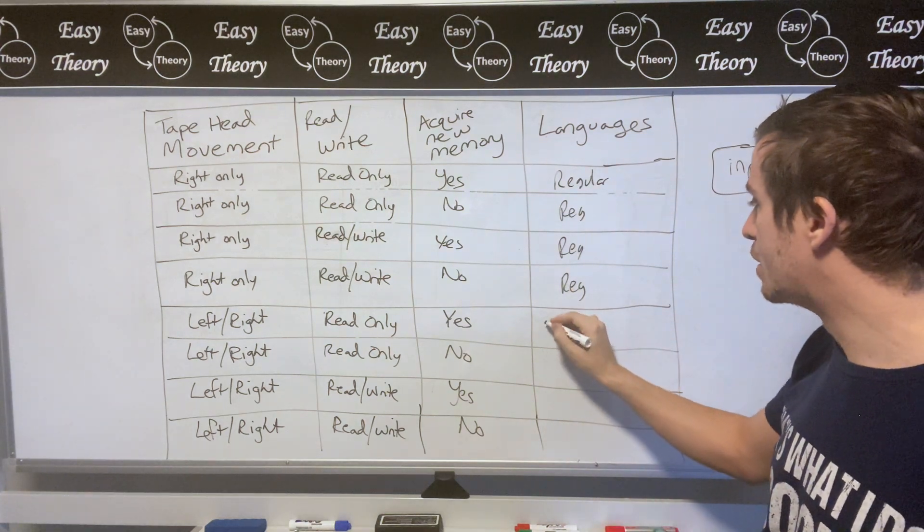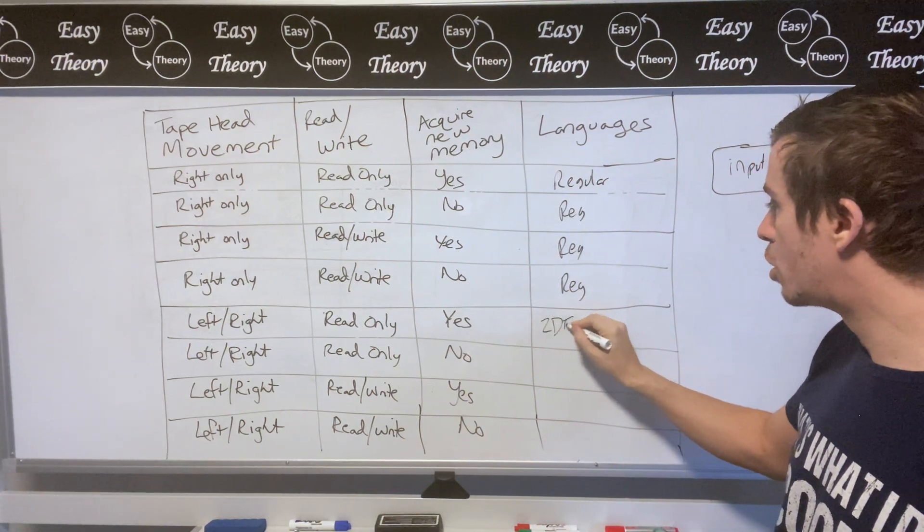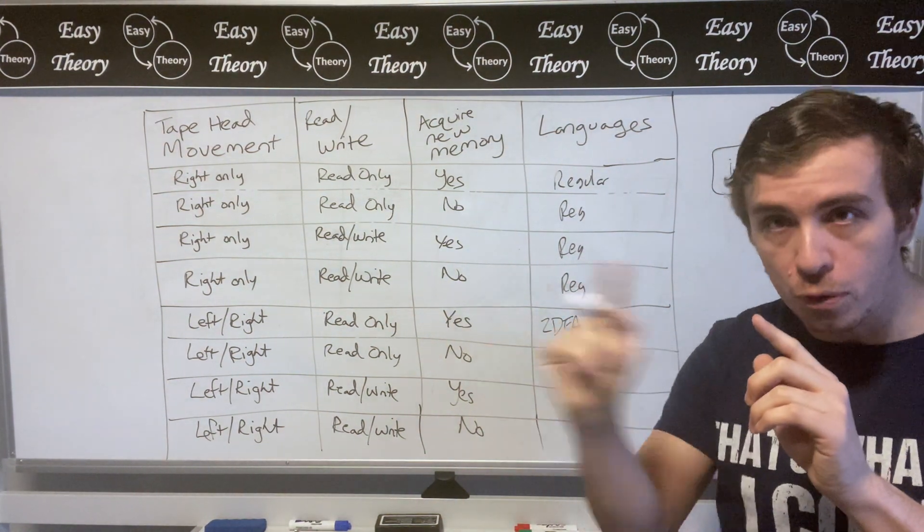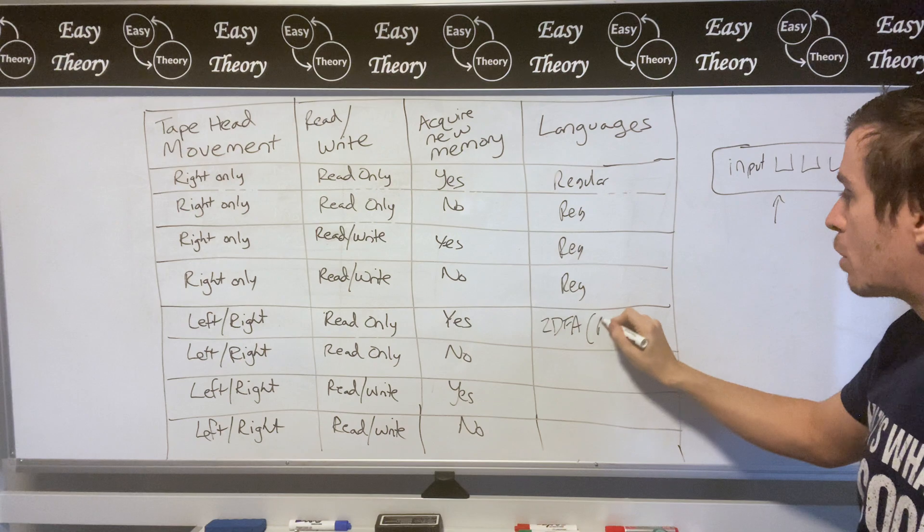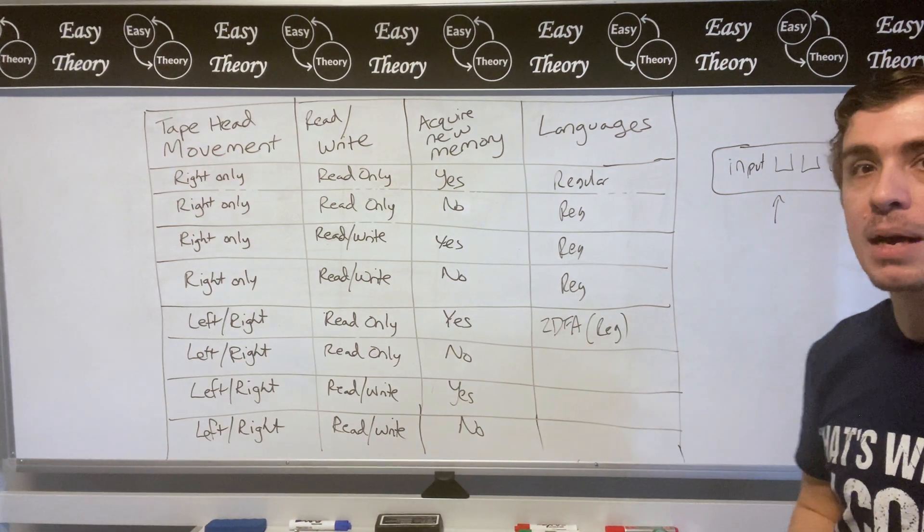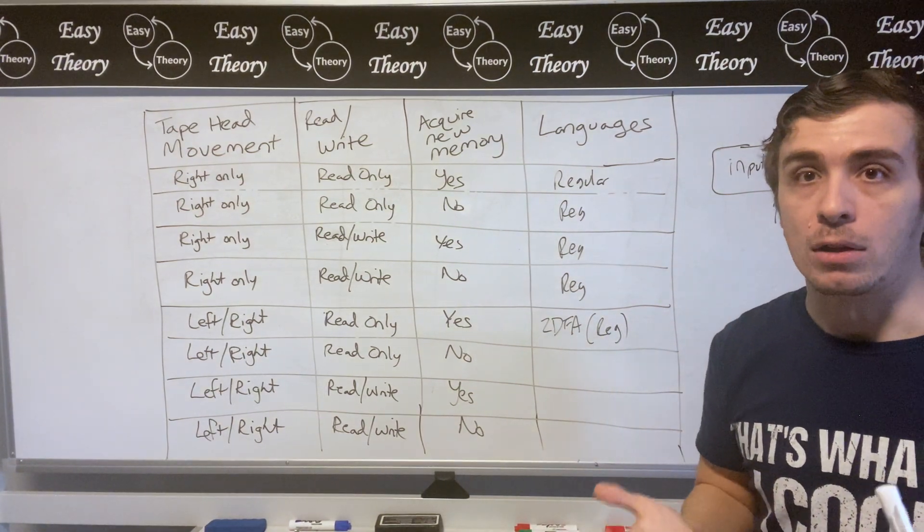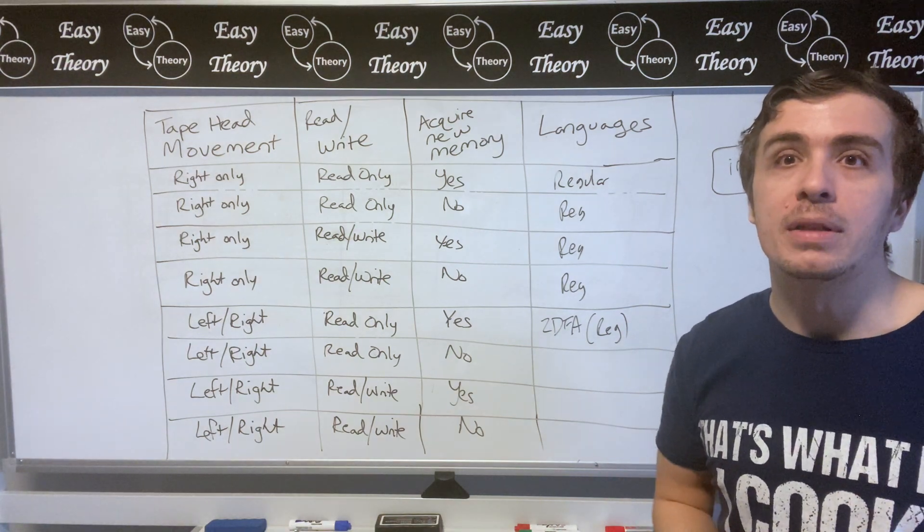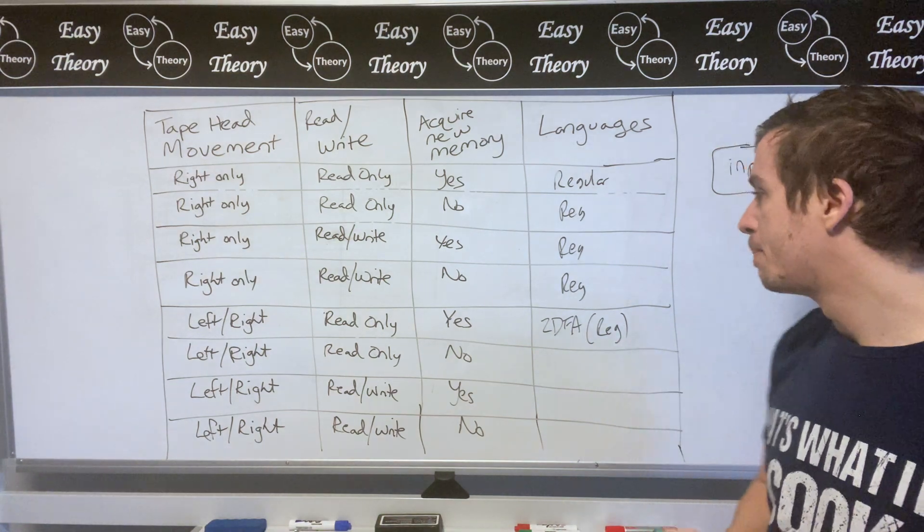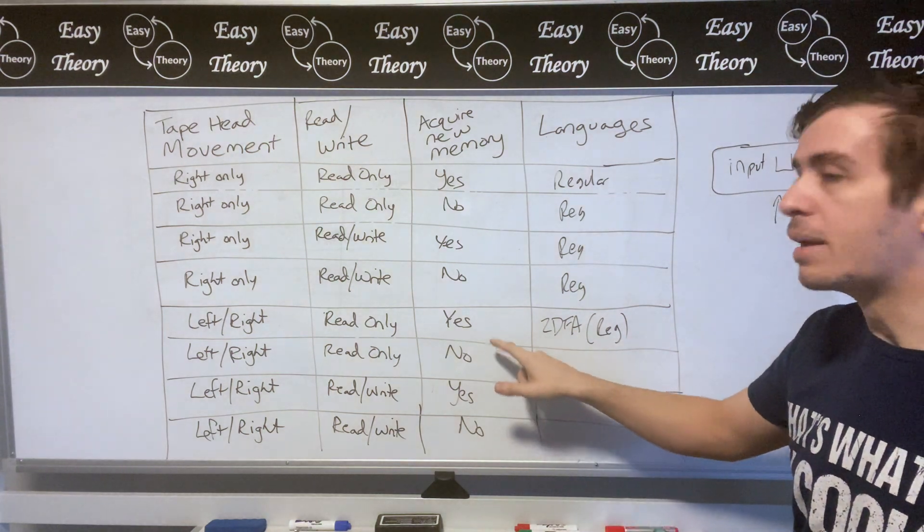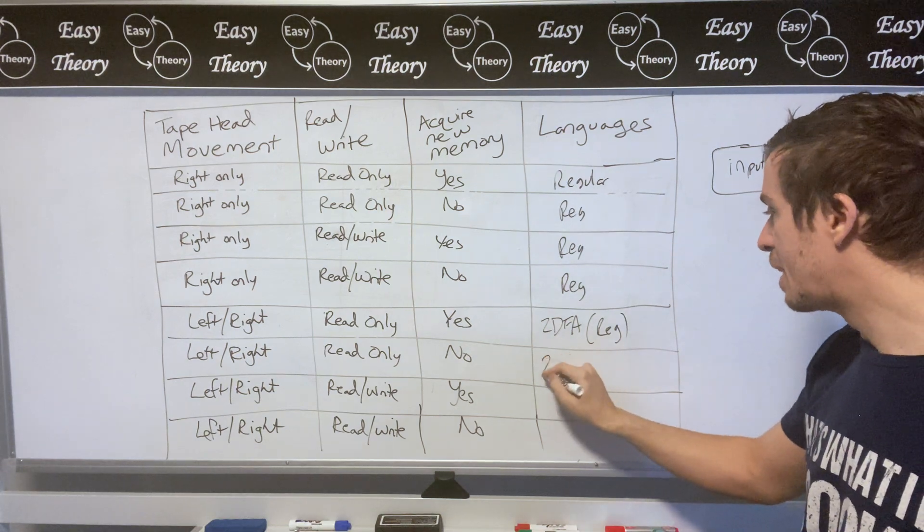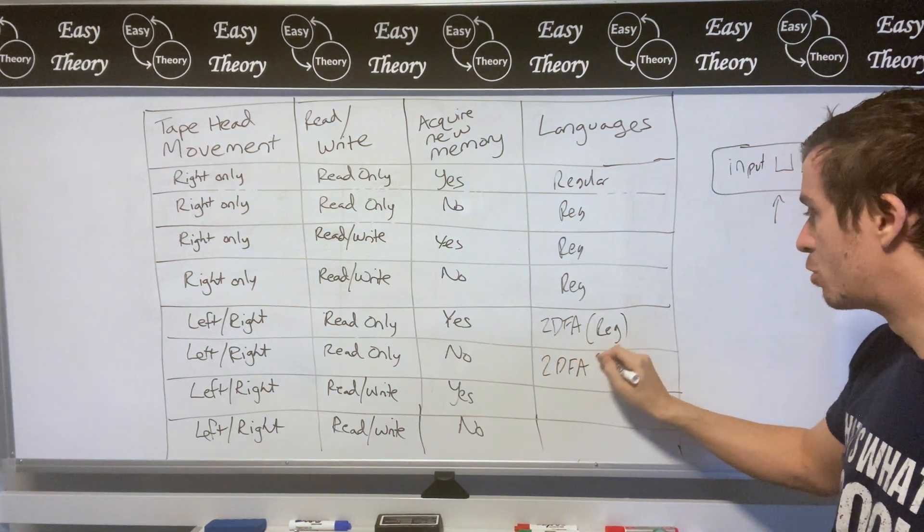And it turns out that those things are what are called two-way deterministic automata, which means that they're just DFAs except you can move left and right. And you can show, video forthcoming, that those are the regular languages, which is pretty cool. It's a quite tricky proof but I'm going to give all the details in an upcoming video about it. And note what we were saying earlier that acquiring new memory is completely useless for this particular model. So this answer is going to be identical to the previous one.